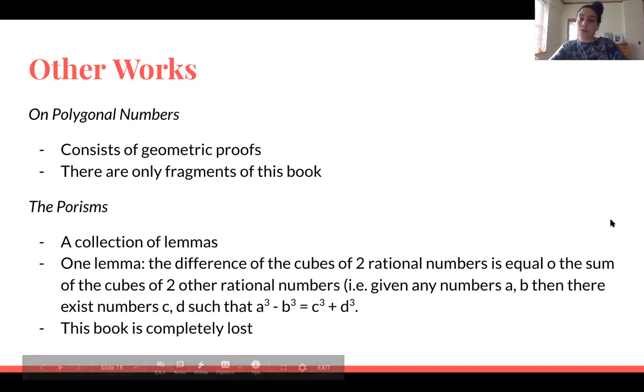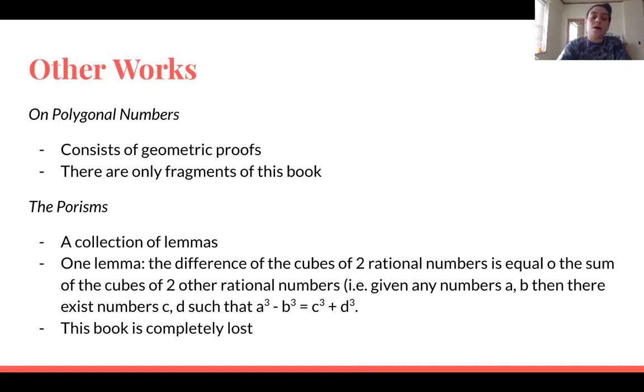Although the Arithmetica was his most important contribution to mathematics, he also had a couple of other works. He had one work called On Polygonal Numbers. And this consisted of geometric proofs. Unfortunately, though, there are only fragments of this book. The whole book is missing. So we only have just a couple pages from there. And then he had another work called The Porisms, which is a collection of lemmas. One of the lemmas is the difference of the cubes of two rational numbers is equal to the sum of the cubes of two other rational numbers. So then, for example, given any numbers A and B, then there exists numbers C and D, such that A cubed minus B cubed is equal to C cubed plus D cubed. Unfortunately, though, this book is completely lost. We only know about a few of the lemmas in The Porisms because he incorporates them into the Arithmetica.